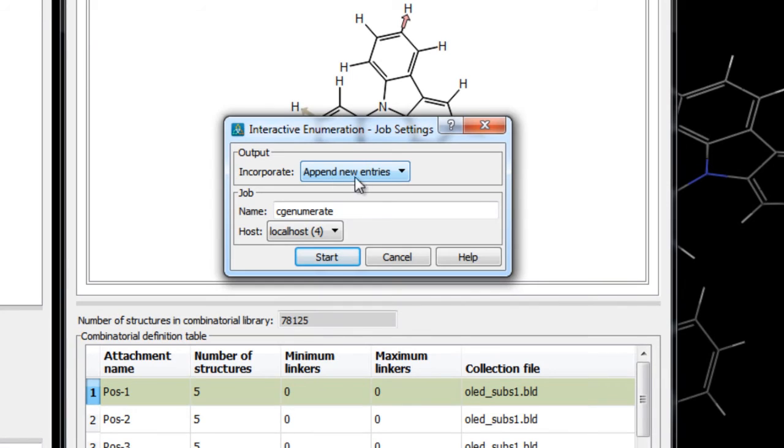For the job settings, we'll append the output to the project table. However, if you intend on generating a very large library with hundreds of thousands of structures and where each structure has many atoms, then you may want to set this to do not incorporate to avoid overloading the project table. We'll use the localhost and optionally rename the job, then we'll click start.